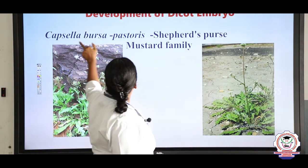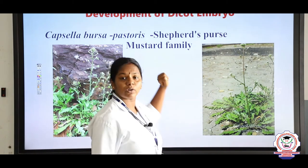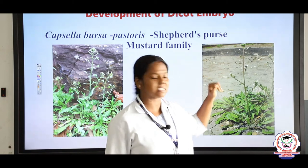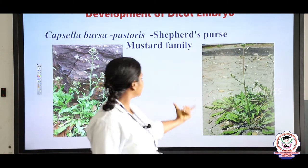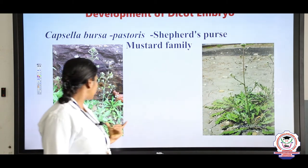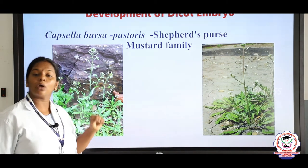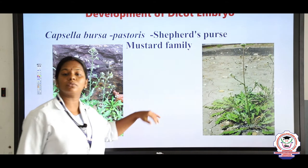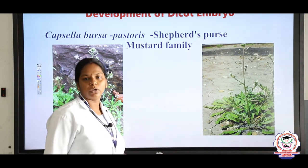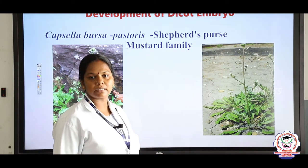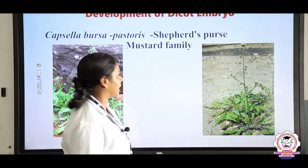The plant Capsella bursa-pastoris, common name shepherd's purse, can be seen on the roadsides. Now we will see how embryo development takes place in this dicot plant.